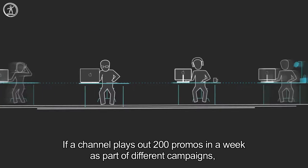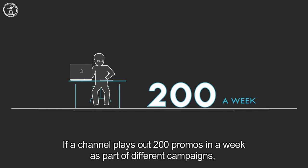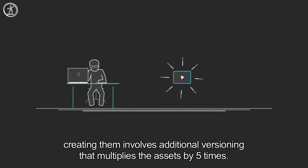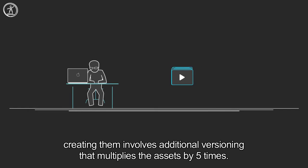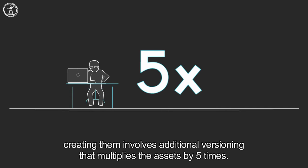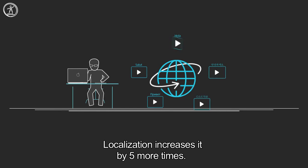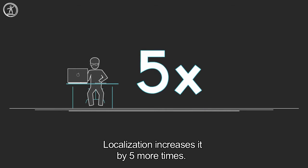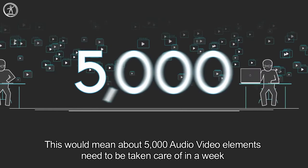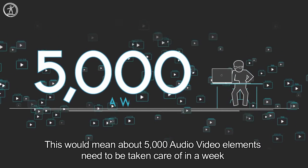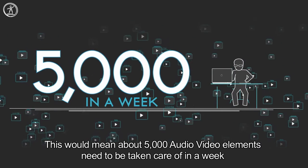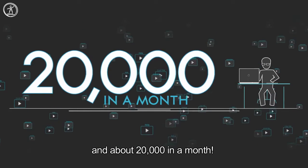If a channel plays out 200 promos in a week as part of different campaigns, creating them involves additional versioning that multiplies the assets by 5 times. Localization increases it by 5 more times. This would mean about 5,000 audio-video elements need to be taken care of in a week and about 20,000 in a month.